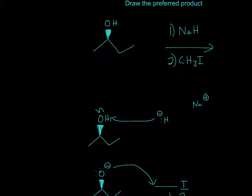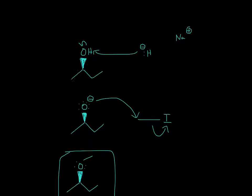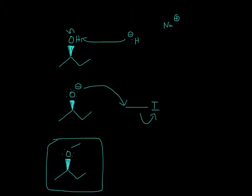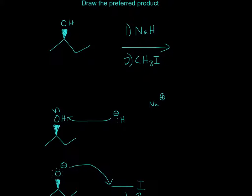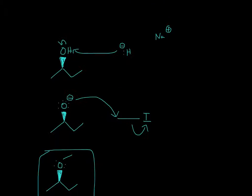So therefore, the hydride will come by, steal the hydrogen, give it to the oxygen, and now the oxygen has a negative charge. And the second part is CH3I. So the negative charge will attack this spot right here, and then the electrons here in this bond will go to the iodine.